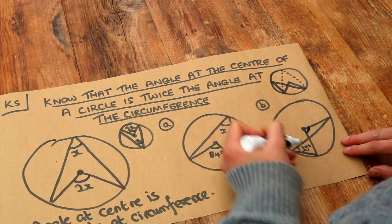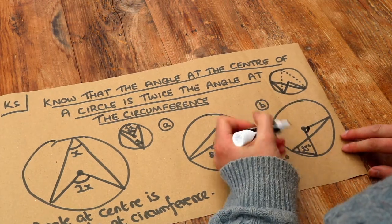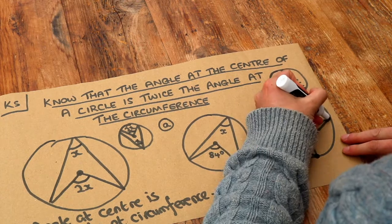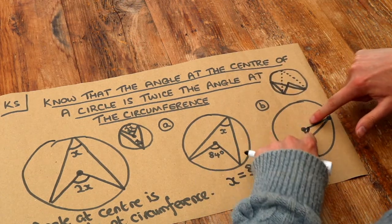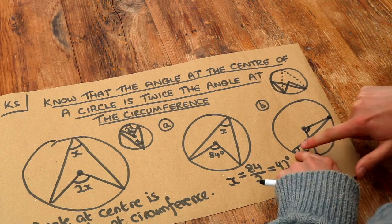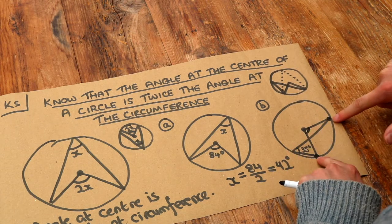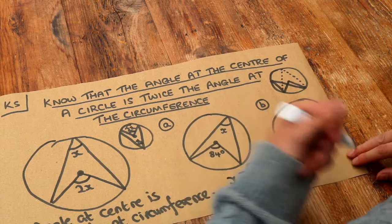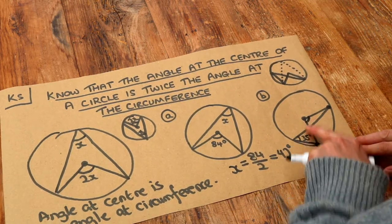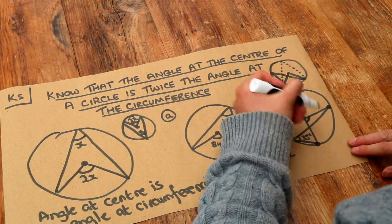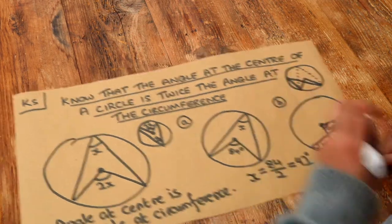This is the angle at the centre. This is the angle at the circumference. Notice they still have these two common points. The angle at the centre followed to the end gives these two points. The angle at the circumference followed to the end gives the same two points. So the theorem still applies. That angle must be twice that one, so that angle there must be 70 degrees.